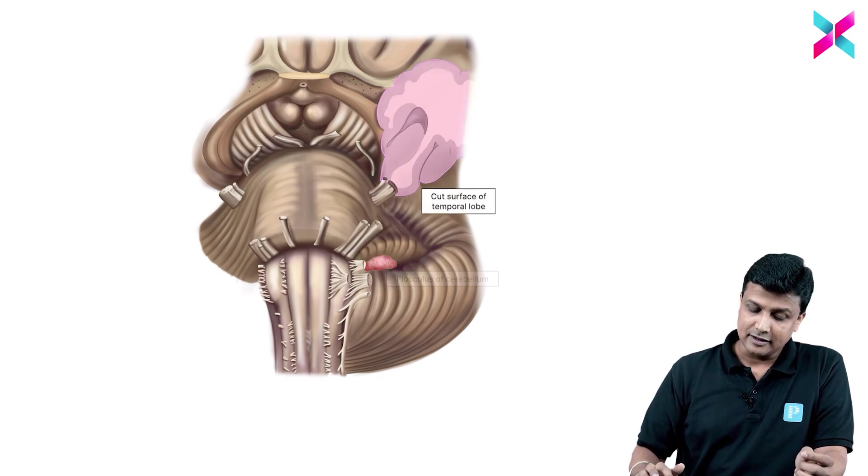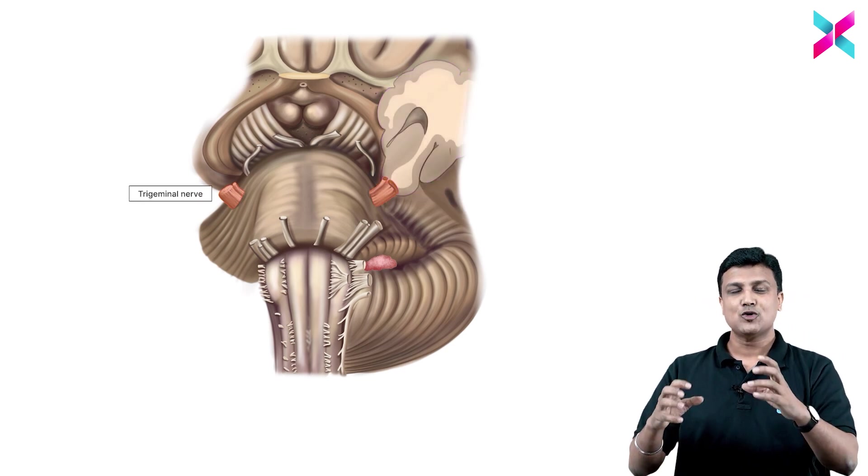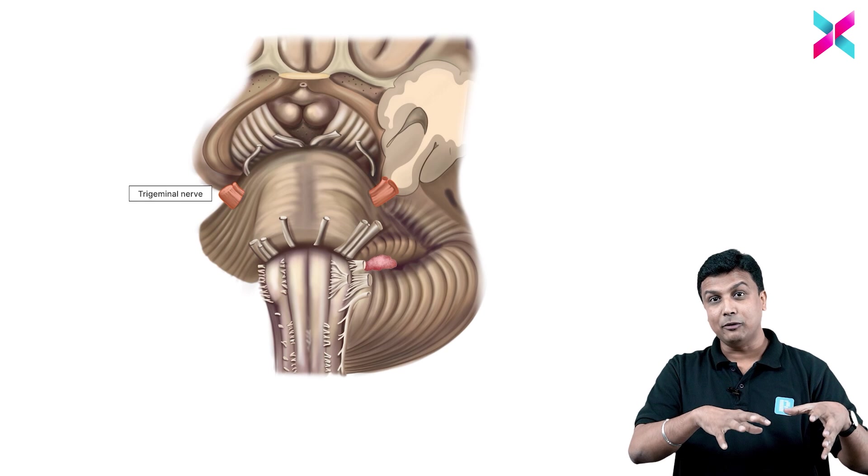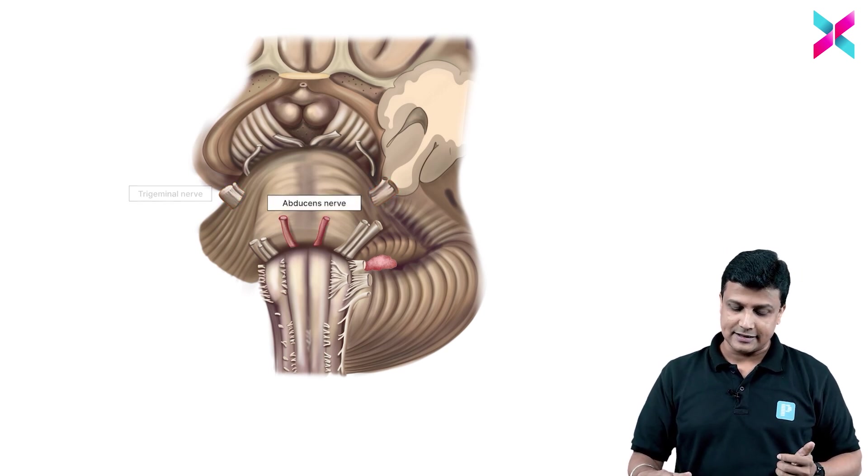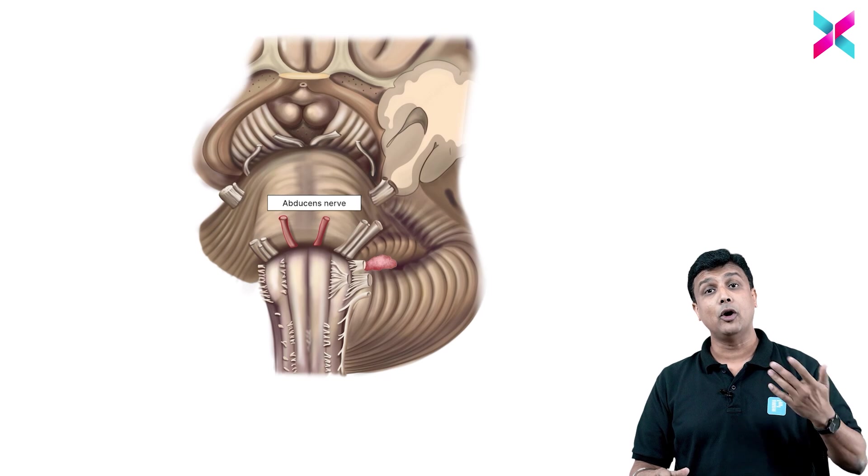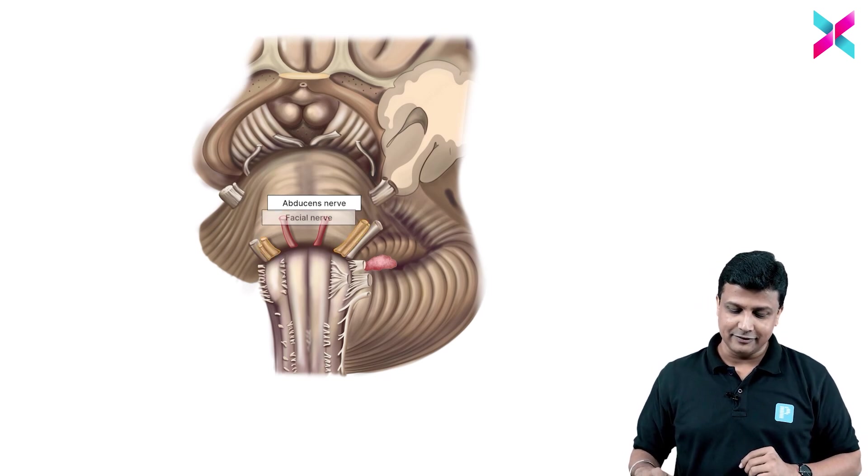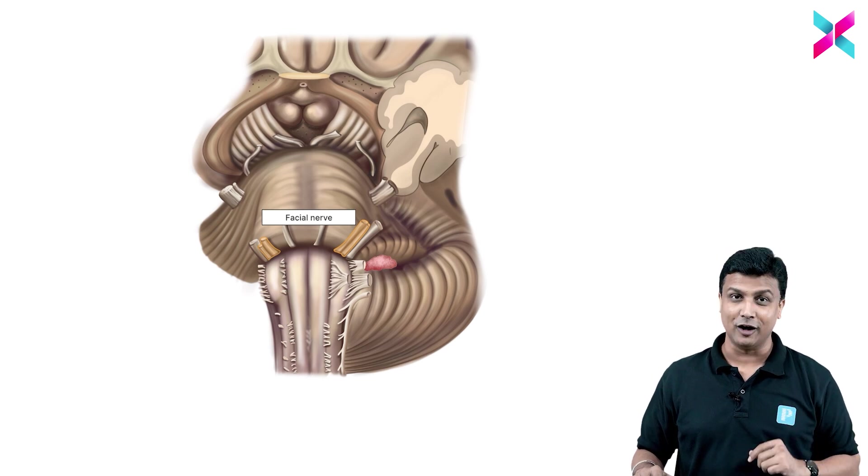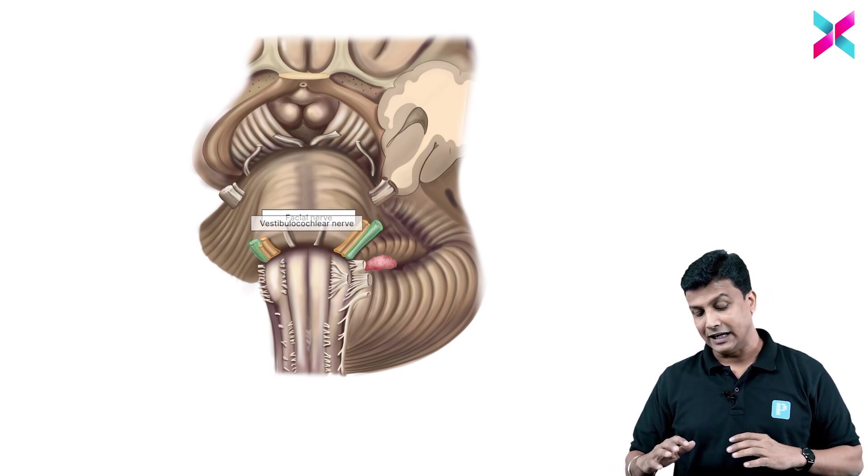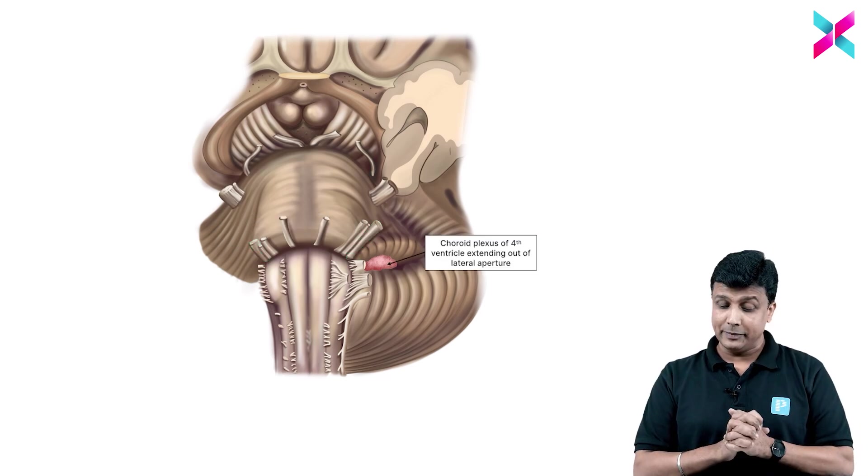Now this one here will be the trigeminal nerve. So trigeminal nerve is coming out between the pons and the middle cerebellar peduncle. And then this is your sixth nerve which is coming out at the ponto-pyramidal junction. To be more specific, seventh nerve will be coming out at the ponto-olivary junction, between the pons and the olive. And then of course the eighth nerve lateral to that one - we can simply say that it is coming out from the ponto-medullary junction.